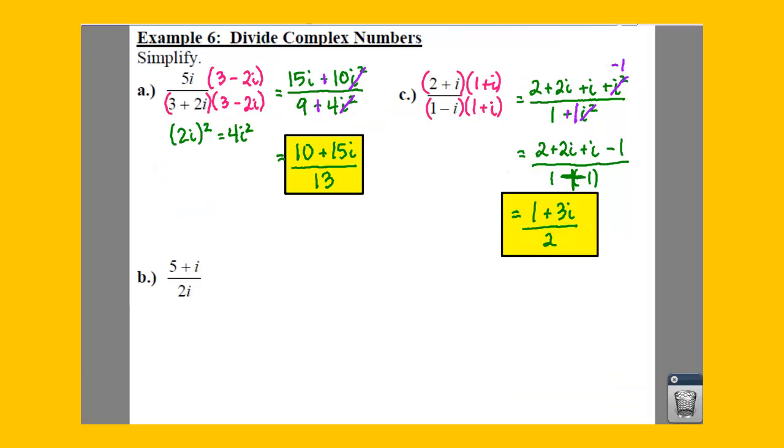So for part b, what we want to do is we're going to multiply top and bottom and get rid of this i. But notice how this is not a 2+i. So we don't have a binomial on the bottom. We have a monomial. So we can't multiply by the conjugate. And this is important to know the difference. You can't multiply by the conjugate. You can't say, oh, multiply by negative 2i. No.